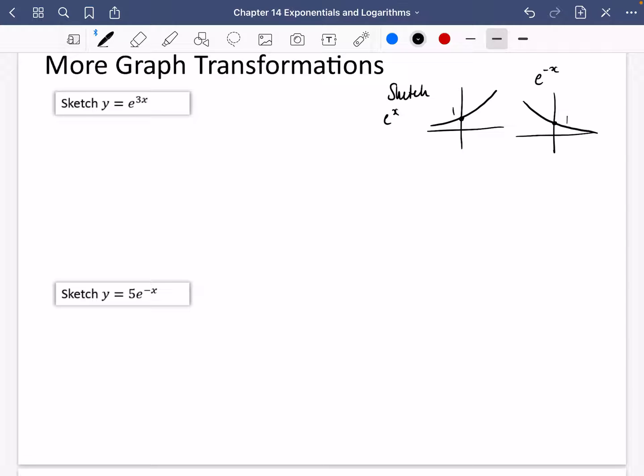Okay, so we could think about a graph transformation here, but I actually think it's better to think of those three things that I talked about earlier on. And the three things are the shape, the y-intercept, and if we need to, the asymptote.